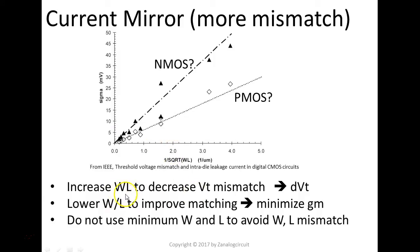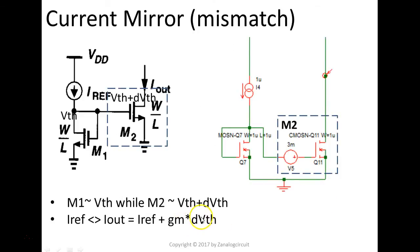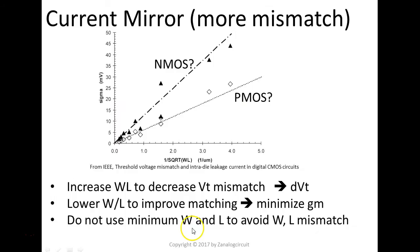So increase the WL, increase the transistor sizing, it decreases the Vth mismatch. So therefore, this one is minimized. The second thing you can do is, you can lower the W over L ratio to minimize the gm, right? Go back to this equation. If you minimize this guy, you're going to minimize the whole item here. So by doing these two, we can minimize the mismatch in a mirror.